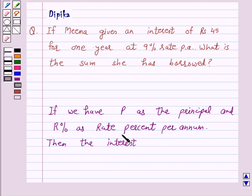for one year is given by interest equals P into R upon 100. So, this is the key idea behind our question.